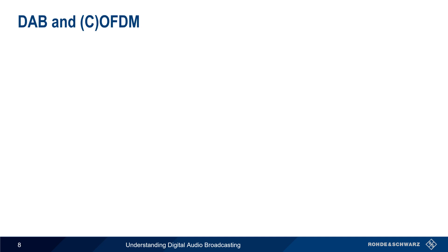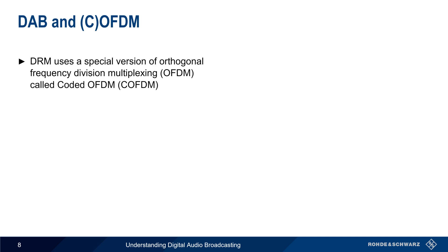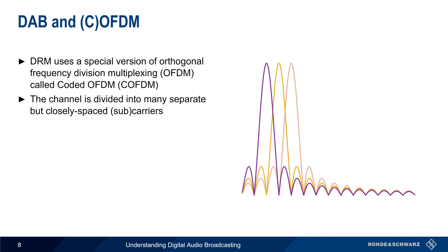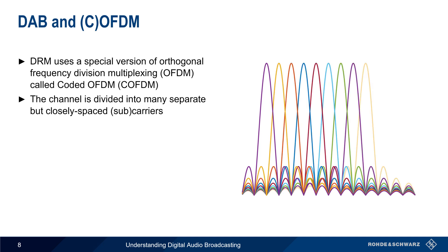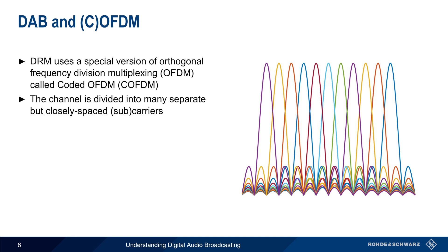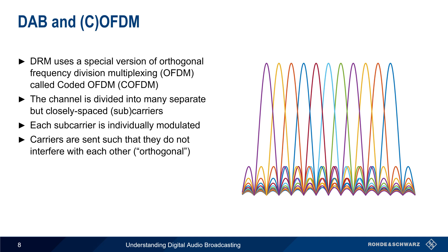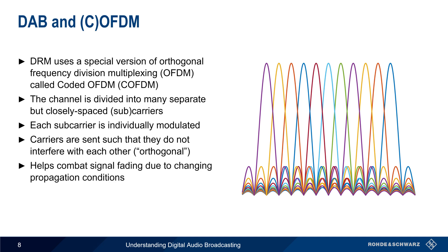The DAB multiplex signal is transmitted using a special coded form of Orthogonal Frequency Division Multiplexing, commonly referred to as OFDM. In OFDM, the channel or bandwidth is divided into many separate but closely spaced subcarriers, each of which is individually modulated. Although the subcarriers are very close together, they are transmitted so as not to interfere with each other — and this is what is meant by orthogonal. One of the primary reasons for using OFDM is that it is robust against signal fading and other impairments caused by changing propagation, particularly in urban environments.